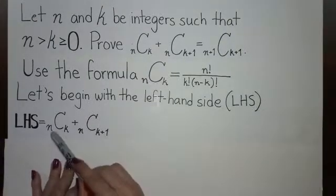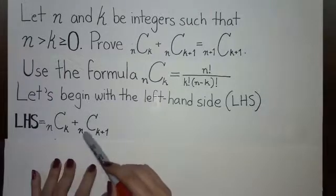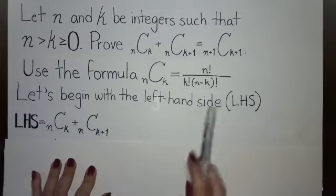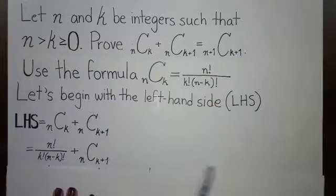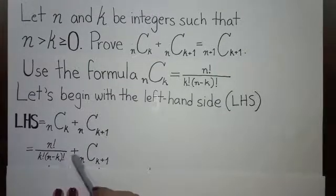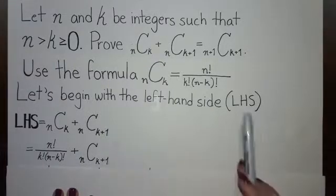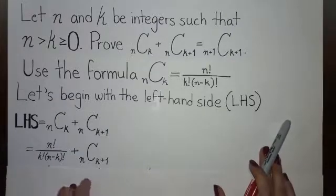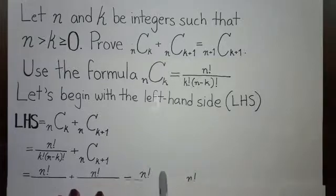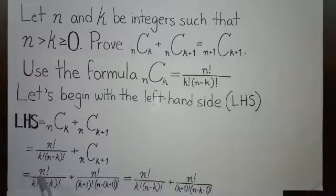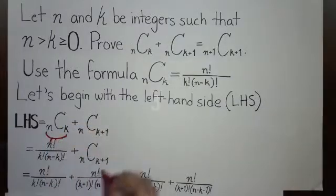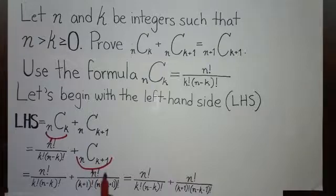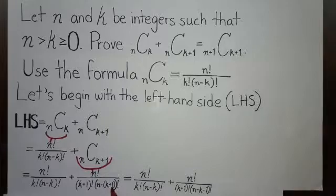The left-hand side is equal to n combination k plus n combination k plus one. Using the formula, we write this as n factorial divided by k factorial times n minus k factorial, plus — applying the same formula to n combination k plus one — n factorial divided by k plus one factorial times n minus k plus one factorial.